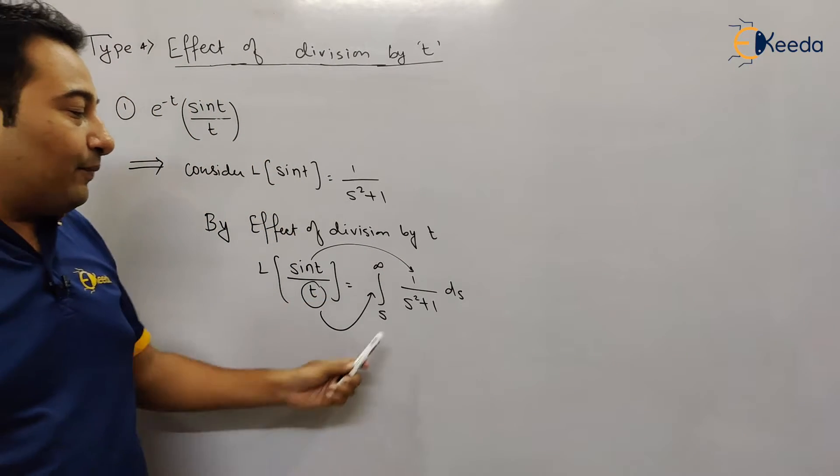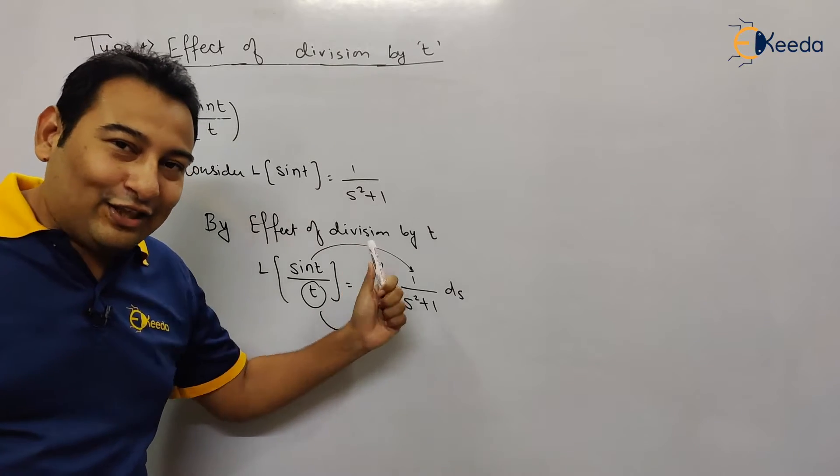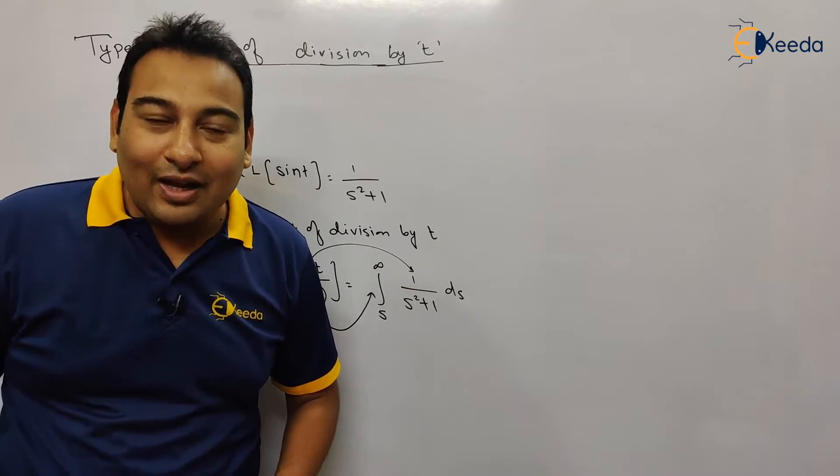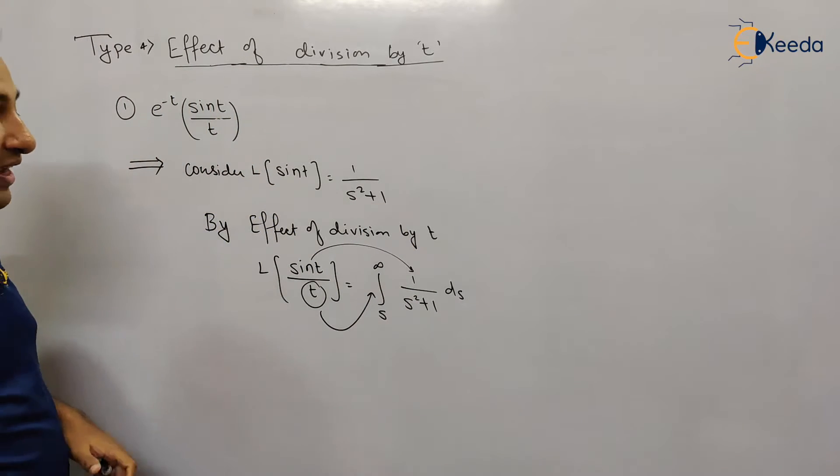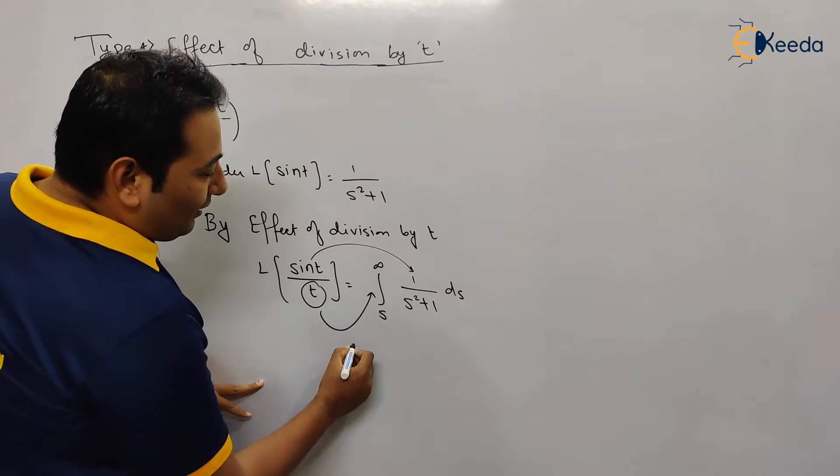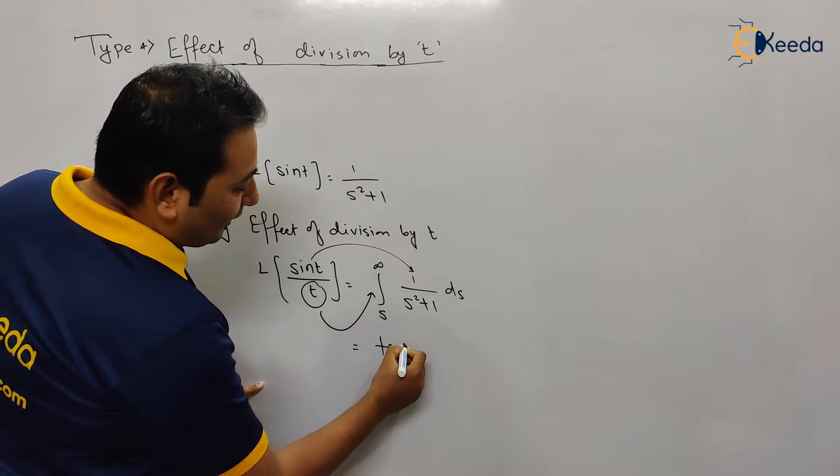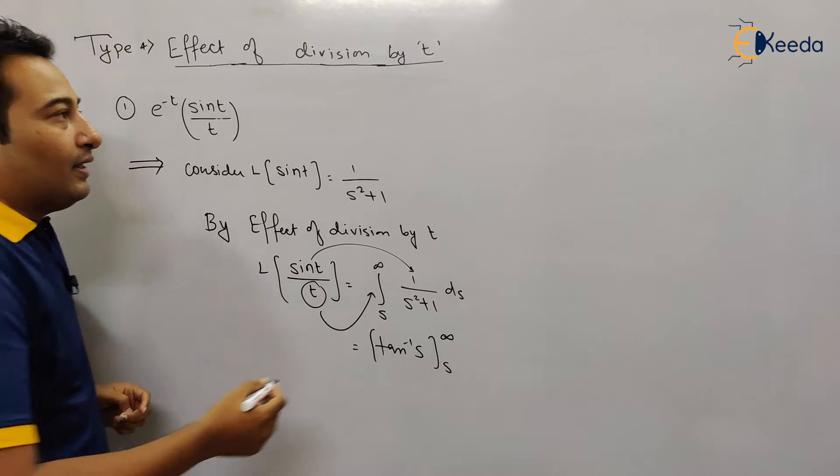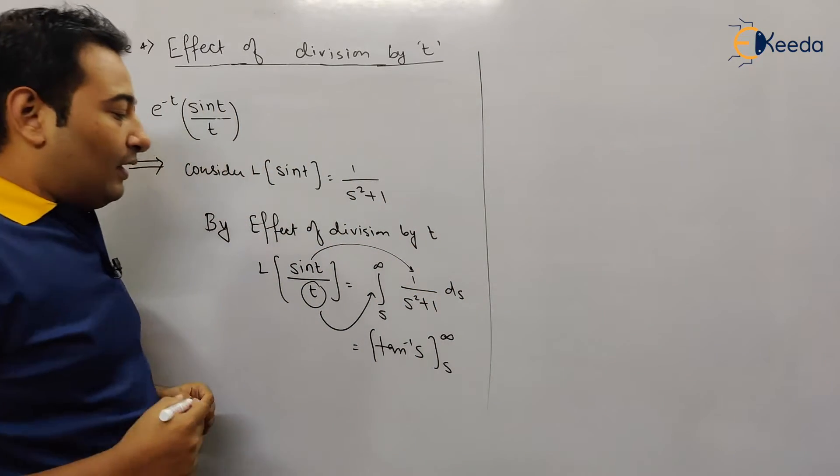Let us integrate. Yes please, how to integrate this term? In the last video I have given you 7 formulas. This is formula number 3, go back and check. This is formula number 3. 1 upon s square plus 1 integration, it is tan inverse s. And what are the limits? From s to infinity.